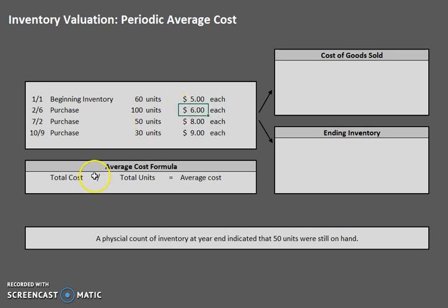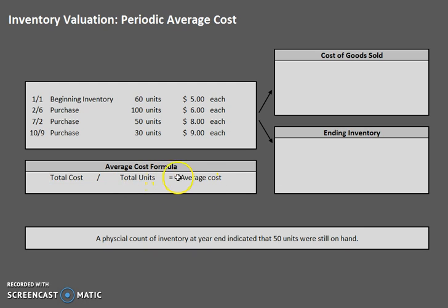For our average cost method we are going to employ this formula: total cost divided by total units equals average cost. So in order to find our total cost, try pausing the video and think about how you would find the total cost of all these units.